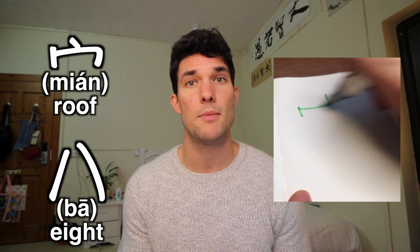So there's the mian and the ba — the roof and eight. When you combine those two it makes the xue, which is like a hole or a cave. Then in the middle there's yan, which is speech, and to the left and right of yan there's yao, which just means small.